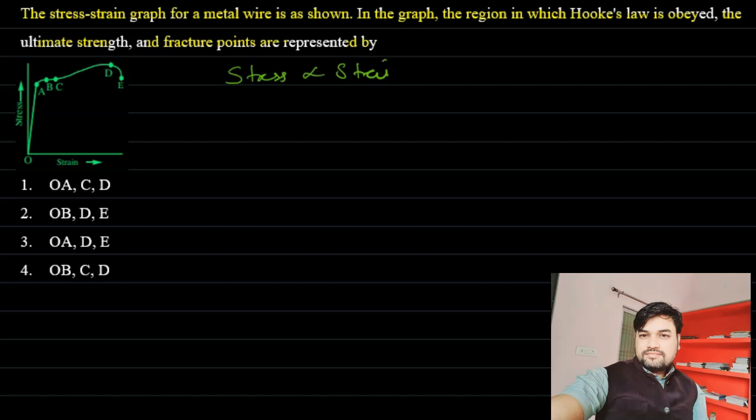Stress is proportional to strain, so the graph will be linear. For which region is the graph linear? OA region. The graph is linear in OA region, so this region will represent the Hooke's law region and Hooke's law will be obeyed.